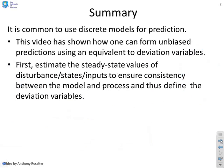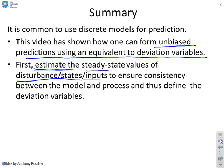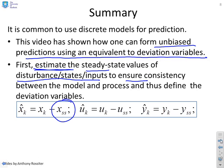So in summary, it's common to use discrete models for prediction. And this video has shown how you can form unbiased predictions using an equivalent to deviation variables. Now here are the key steps. You need to estimate the steady state values of the disturbance, states, and inputs which ensure consistency between the model and the process. Once you've got those estimates, you can define your deviation variables. But the key thing here is it's reliant on these estimates here.